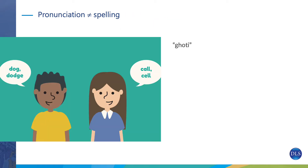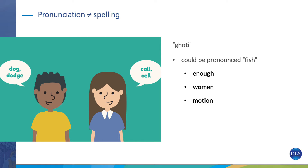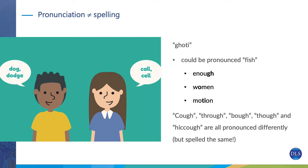A big challenge in English is that pronunciation and spelling don't match and are not consistent. A famous example: the word 'ghoti' could theoretically be pronounced 'fish' — taking the 'gh' from 'enough,' the 'o' from 'women,' and the 'ti' from 'motion.' Other examples include cough, through, bow, though, and hiccup — all spelled differently yet with very varied pronunciations. English's spelling and pronunciation are really not consistent, which is also a problem in French.